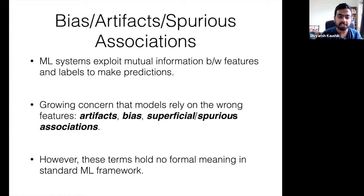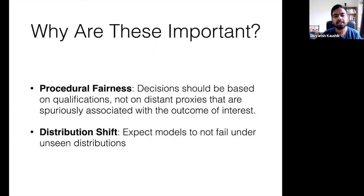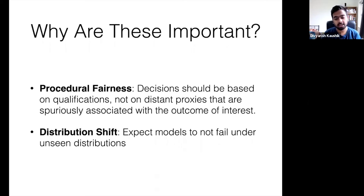These terms hold no formal meaning in the standard ML framework. It's not clear what precisely constitutes a spurious correlation or why a model should not rely on it in the first place. But there are some features that we as humans know are wrong for us to rely upon in certain decision-making contexts, such as relying upon one's gender to determine whether to offer them a computer programming job. So why are these issues important to discuss from a modeling context?